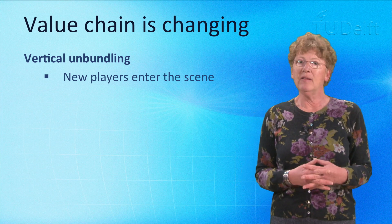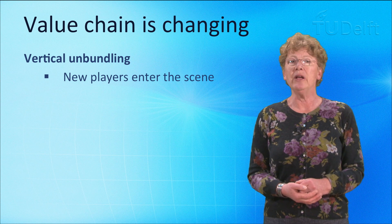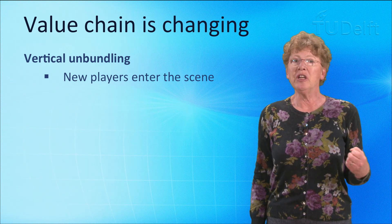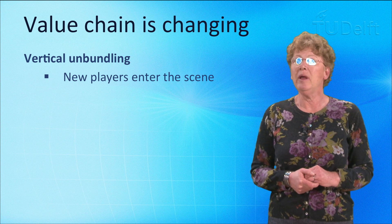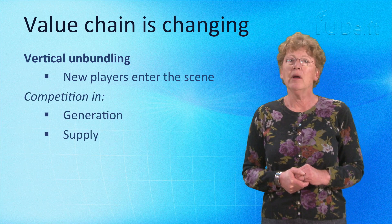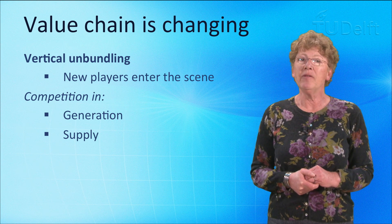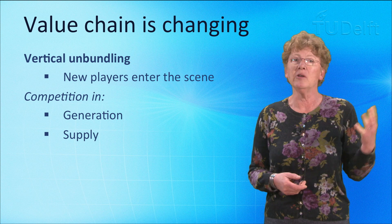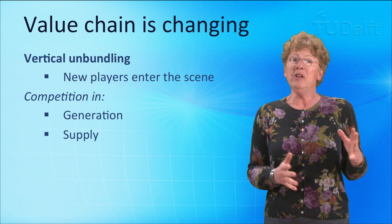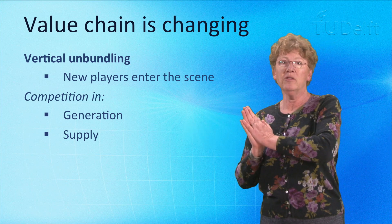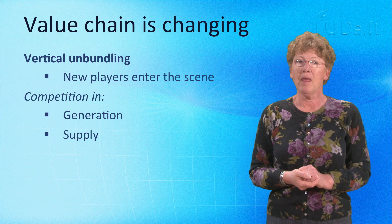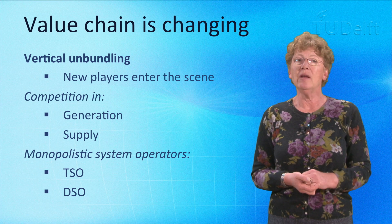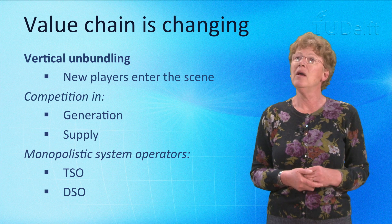In recent decades, however, processes of infrastructure reform have induced so-called vertical unbundling of the electricity value chain. In many countries, power generation has largely been privatized and now takes place in a competitive market. Similarly, energy wholesale and even energy retail markets have in many countries been opened up to competition. With these markets, new players have entered the scene such as market operators, traders and brokers. In between power generation and supply to end-users is the transport over grids. These grids are still owned, operated and planned by monopolistic system operators, known as TSOs and DSOs.